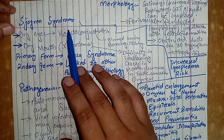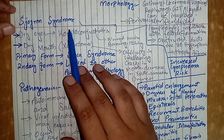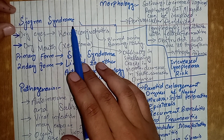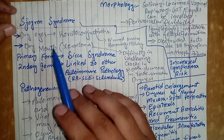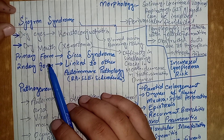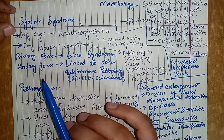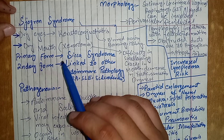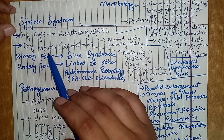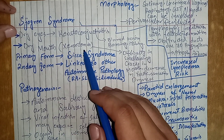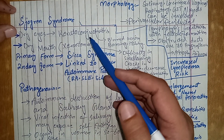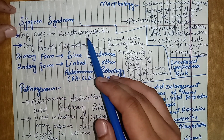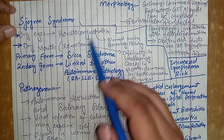Sjogren's syndrome is basically an autoimmune disease in which there is autoimmune destruction of the salivary glands as well as lacrimal glands. When salivary glands are destroyed, there is dry mouth, which is called xerostomia, and when lacrimal glands are destroyed, there are dry eyes, which is called keratoconjunctivitis.